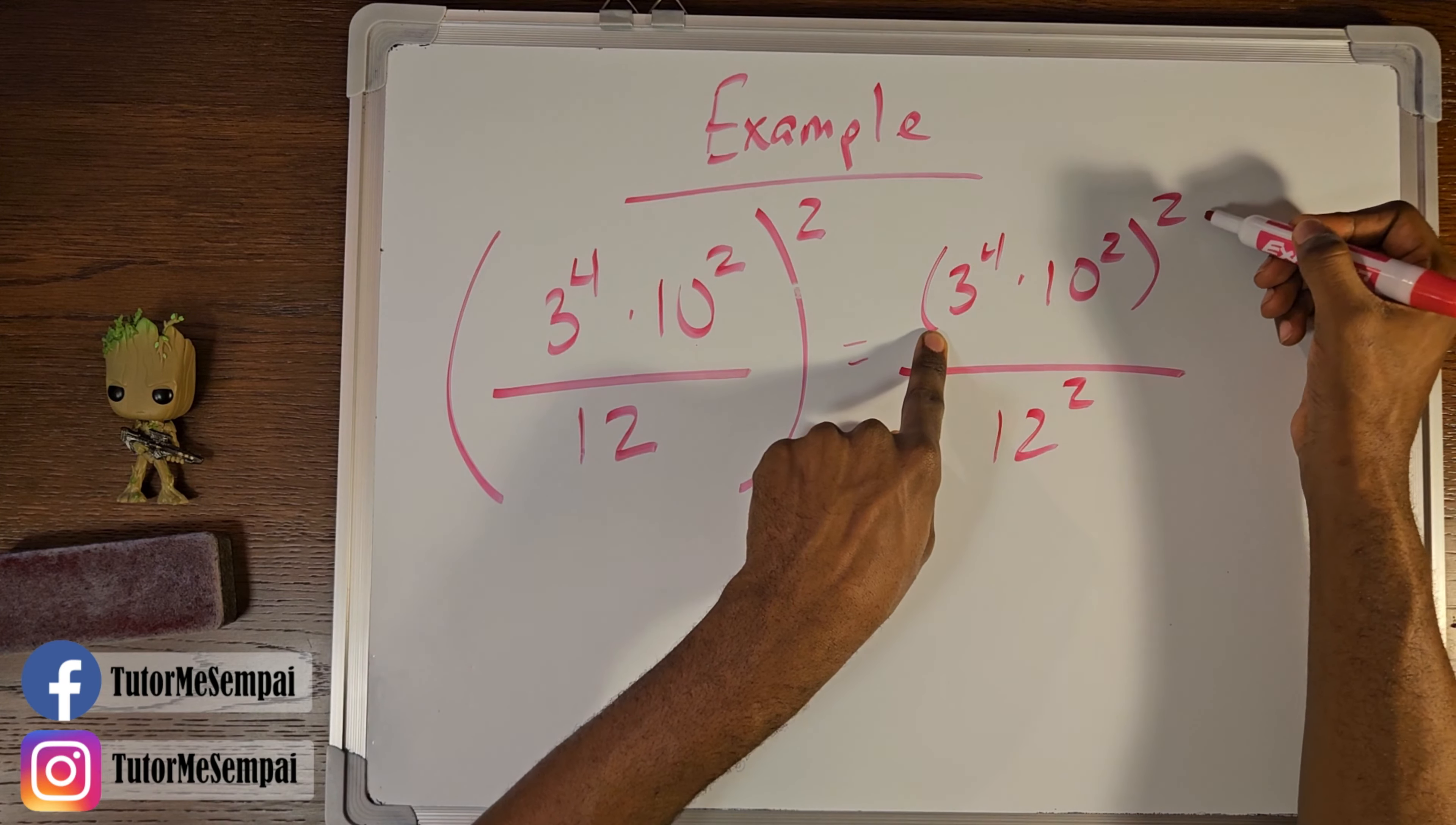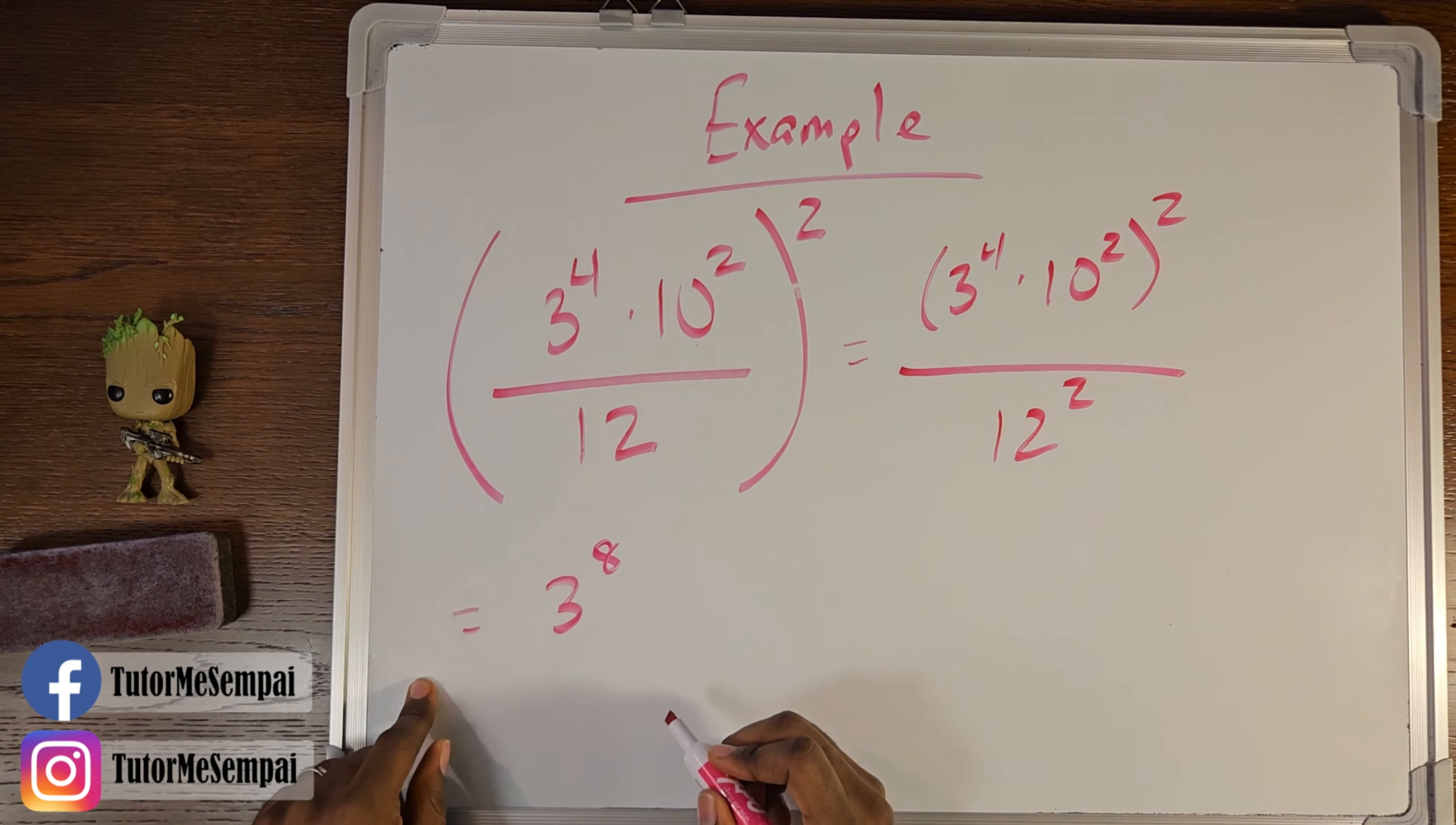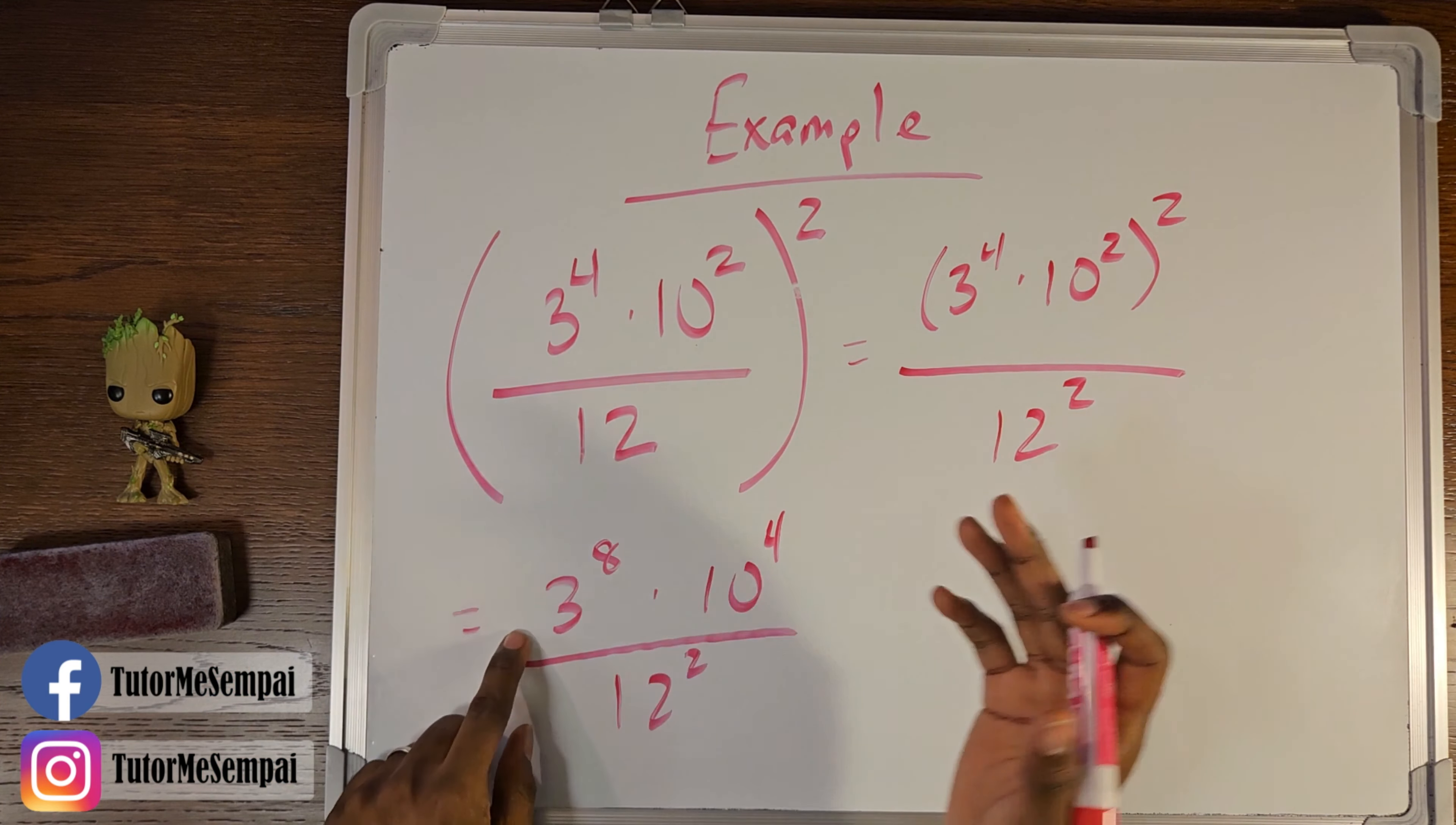So this three to the fourth goes to three to the four times two—eight—and this ten squared goes to two times two—ten to the fourth—and all of that goes over 12 squared. So now everything has a single exponent.